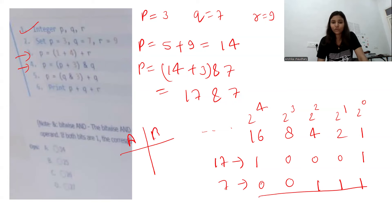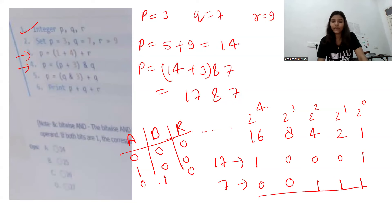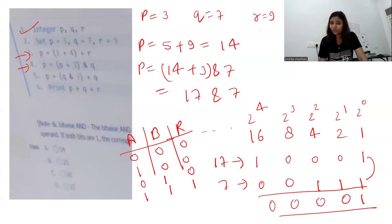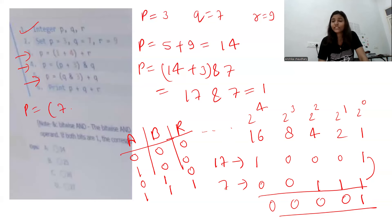For the AND operation: if both operands are 1, result is 1; otherwise 0. Taking AND of 17 (10001) and 7 (00111): only the last bit has both as 1, so the result is 1. The current updated value of p is 1. Now at line 5 we need to update p again using q AND 3, then add 7.